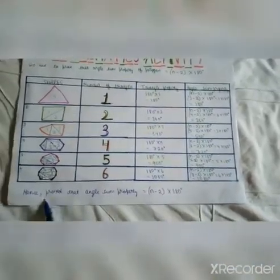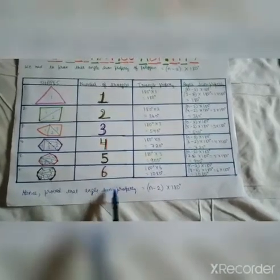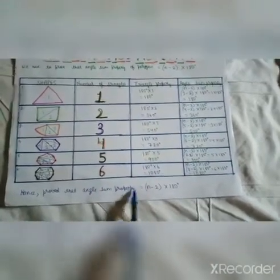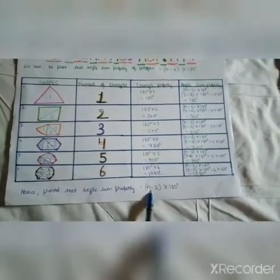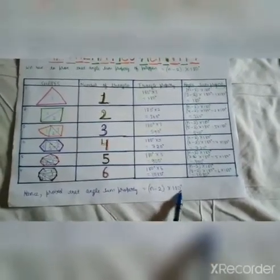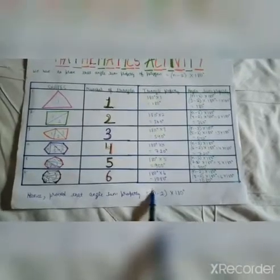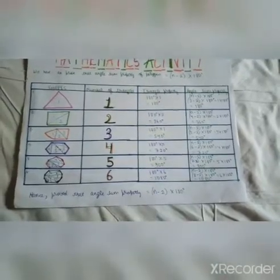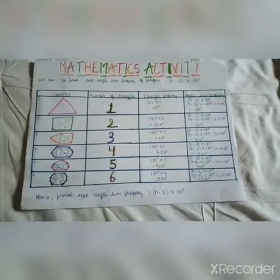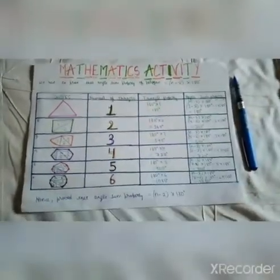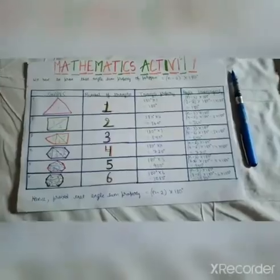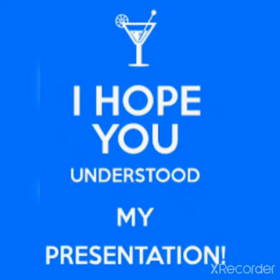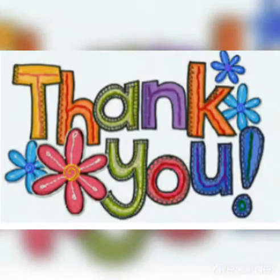Hence we have successfully proved that the angle sum property of a polygon is (n-2) × 180 degrees, where n is the number of sides. Hope you understood it. Thank you, and hope you enjoyed it.